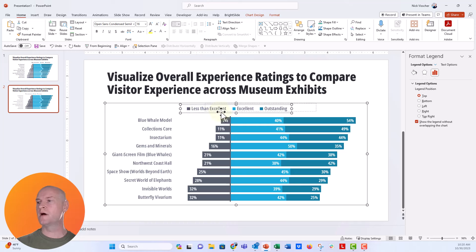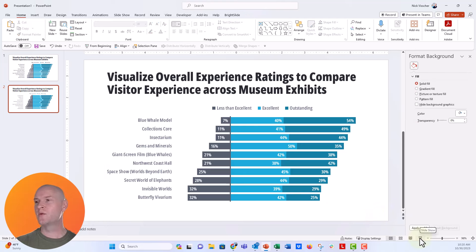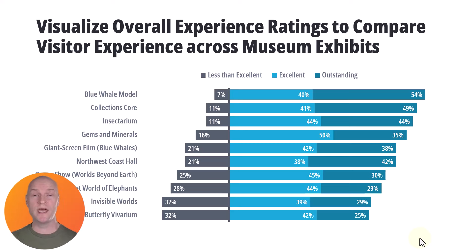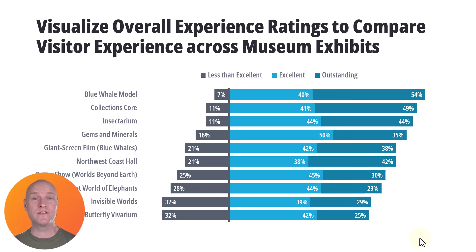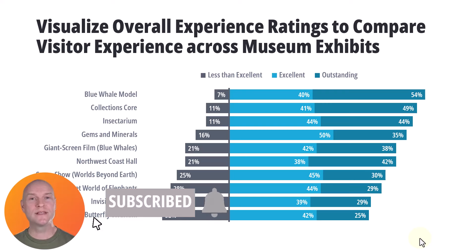I'll move the legend a little bit so the legend categories are closer to the data they describe. You could also delete the legend and create your own by adding text boxes on top of the series. And there you have it — a really nice, beautiful diverging stacked bar chart, the perfect way to visualize your overall experience ratings, especially great for museums comparing different exhibits. I hope you liked this video — give it a thumbs up, subscribe, and let me know how you use this in the comments!